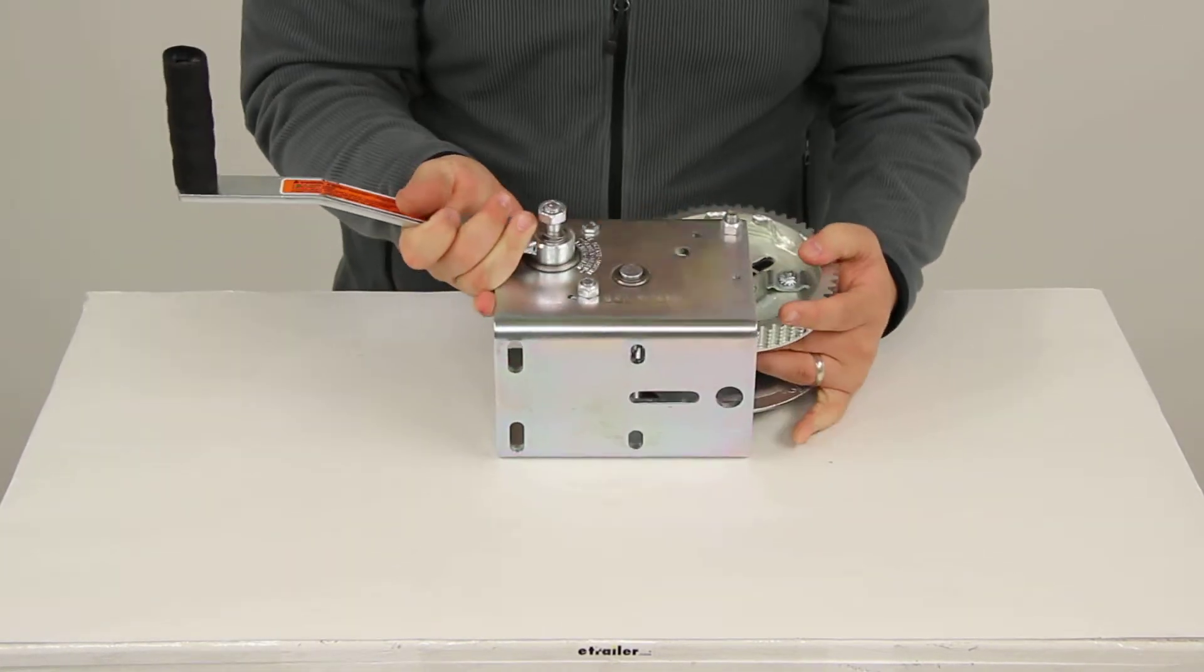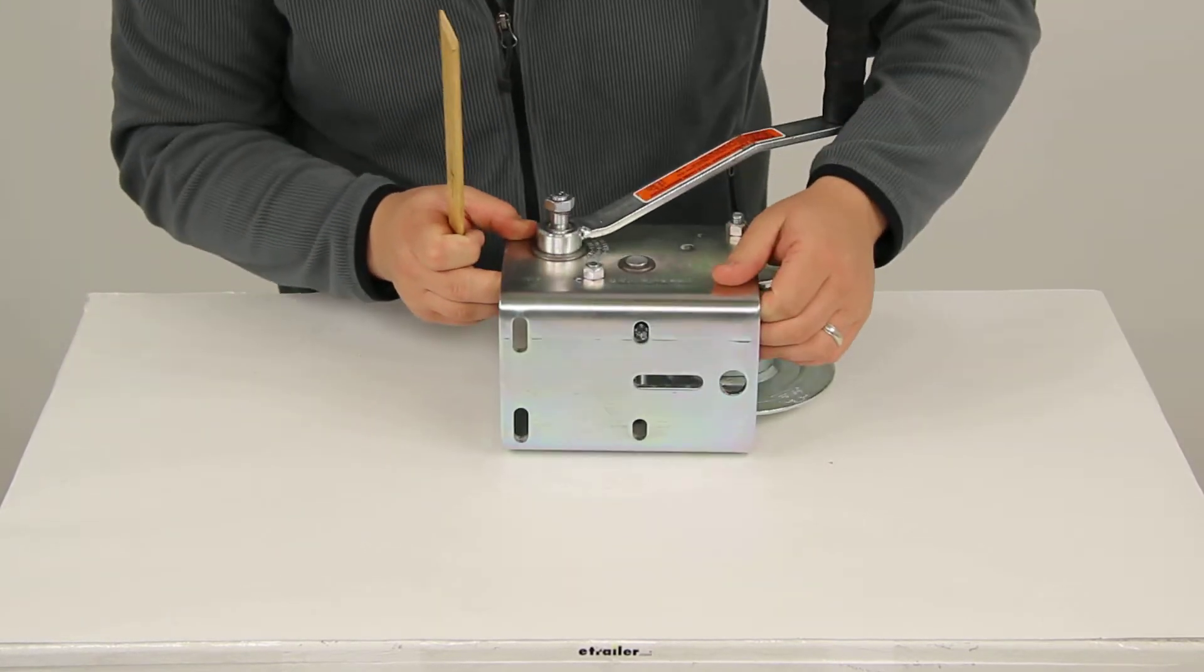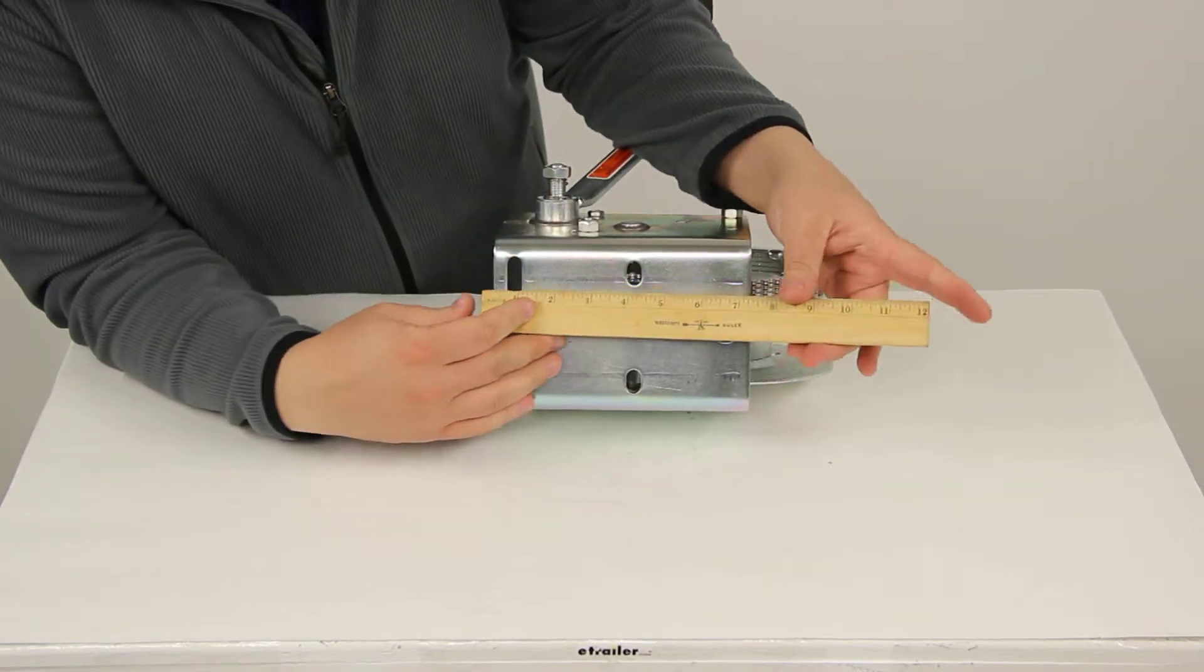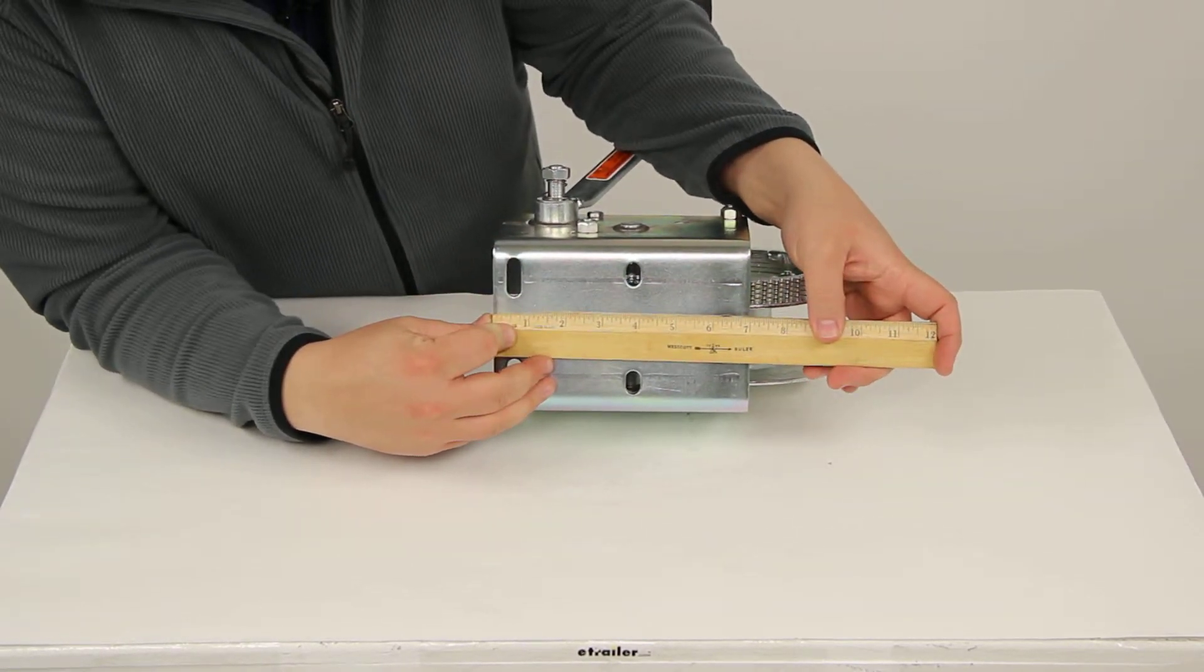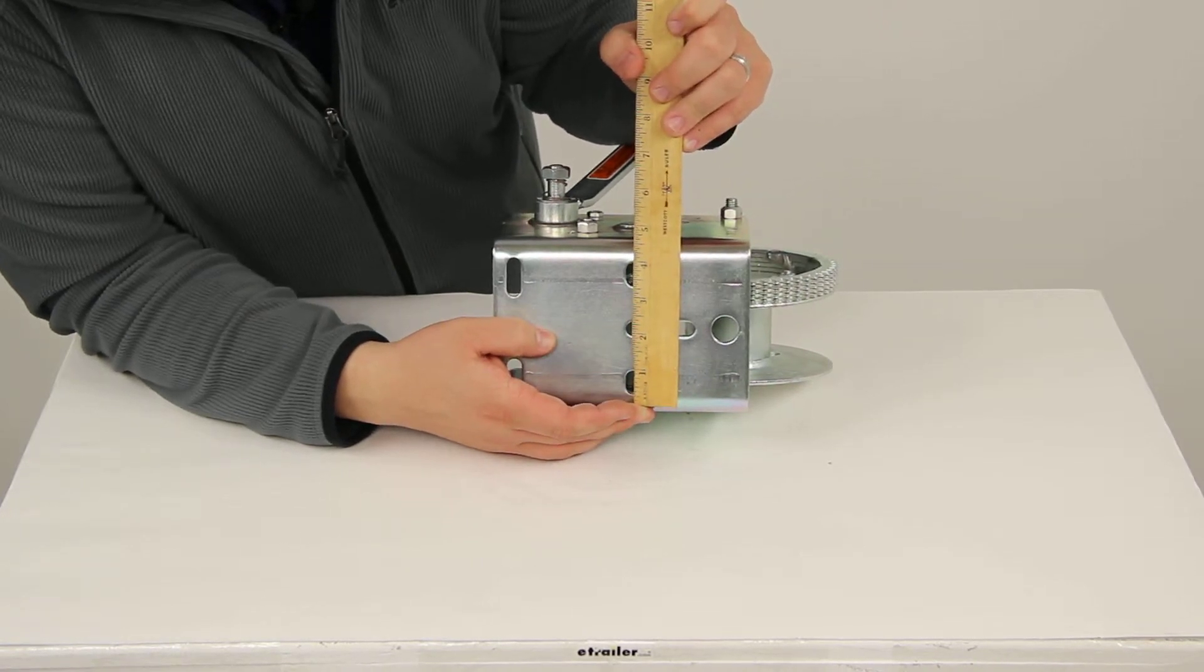Here on the bottom, you can see that it does have pre-drilled mount holes for an easy bolt-on installation. Our mounting plate is going to measure about 7 inches by 4 1/2.